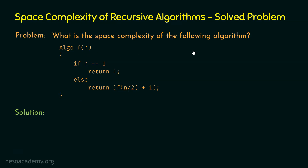Let's find the depth of recursion by tracing the function calls in a generalized fashion — I am not putting any specific n value here. f is called, and within this function we have the base case. Assuming n is not equal to 1, the else block will be executed, which contains the statement return f. We are only interested in the depth of function calls, so from f(n) we need to call f(n/2).